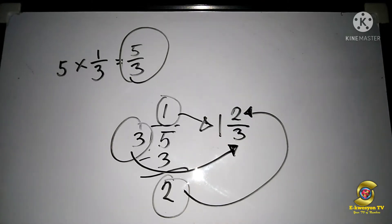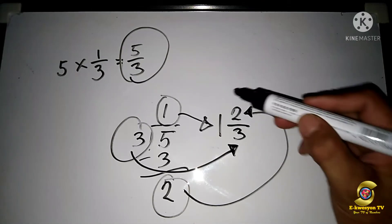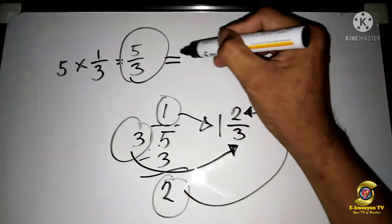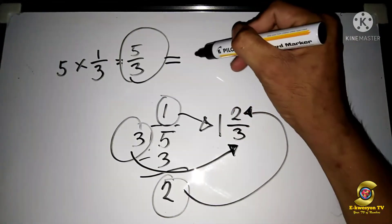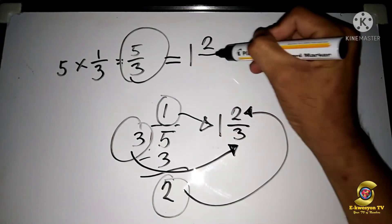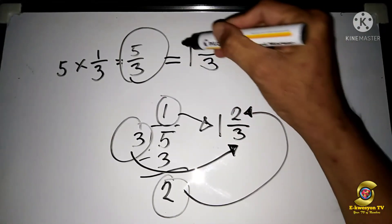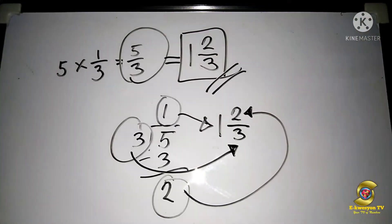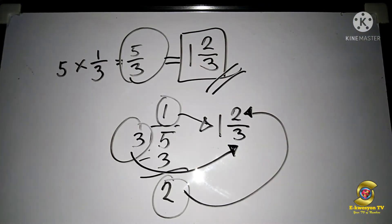So our final answer is one and two-thirds. That's how you convert an improper fraction — just divide the numerator by the denominator.